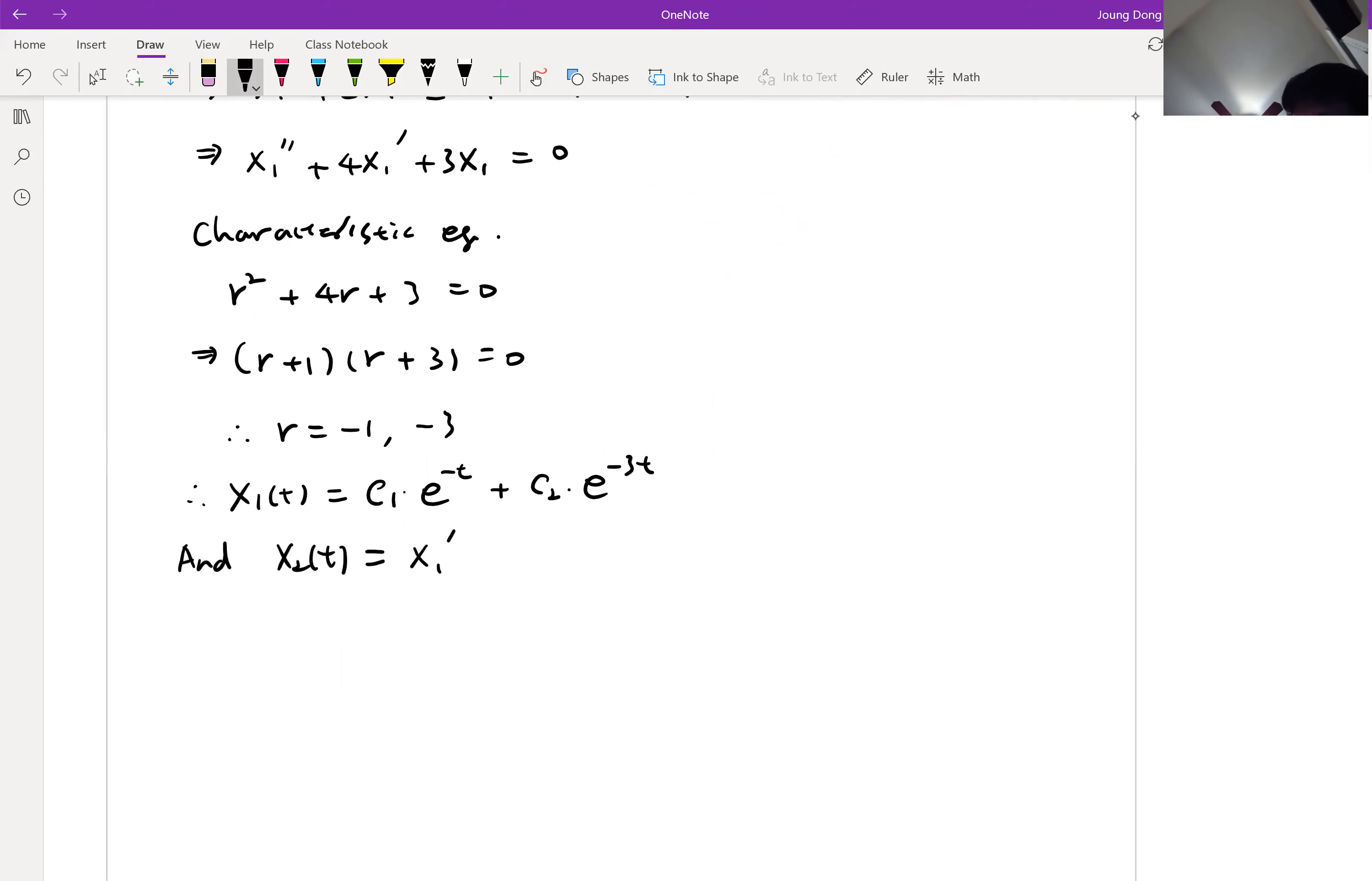x1 prime, which means we can plug in everything. x1 prime is negative c1 e to the minus t minus 3c2 e to the minus 3t, that is x1 prime, and plus 2 times x1, c1 e to the minus t plus c2 e to the minus 3t. Then let me clean up again.